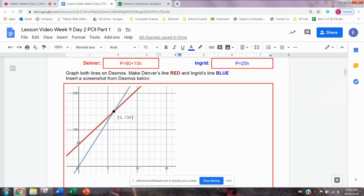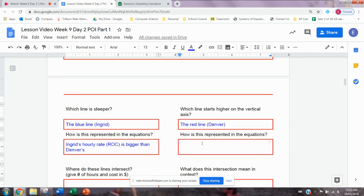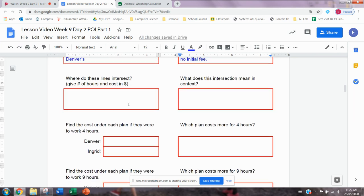And then it asks how this is represented in the equations. Now, if you guys remember from your week eight stuff, what was this starting point? That was your initial. And where is that in the equation? That's the first number, the 60 that is separate from the ROC times the independent variable. So the 60. And remember, Ingrid didn't have a flat rate. She didn't have an initial fee. So Denver has an initial fee of $60, but Ingrid does not. So we would just kind of write a sentence or a point form about your answer to each of these in the red boxes.